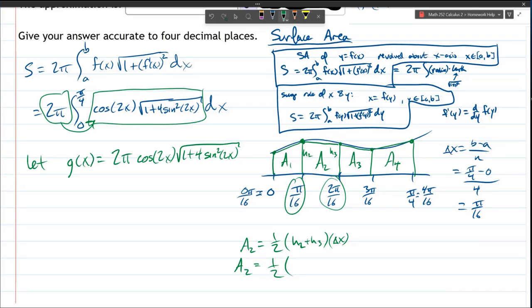So H2 is G of, so again I label it over here, it's G of the x value of H2, which is π over 16. Now when you plug it in, remember there's two places x shows up, so make sure you plug in π over 16 for both places. H3 is going to be G of the other x value, 2π over 16. And that's just going to go right in here for H2 and H3.